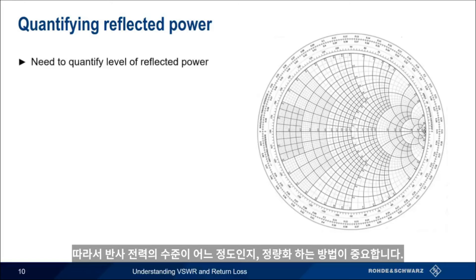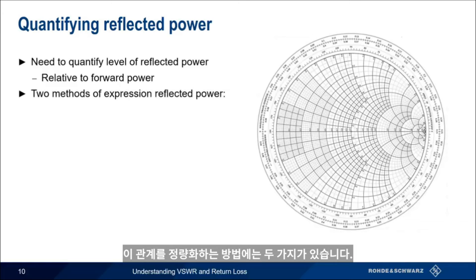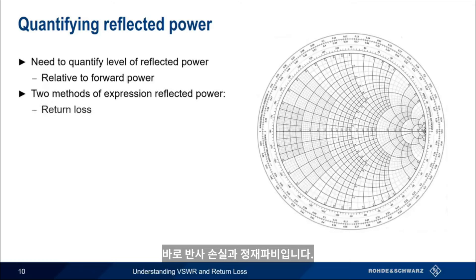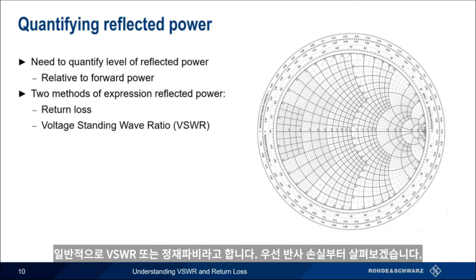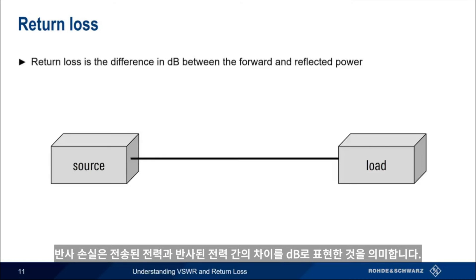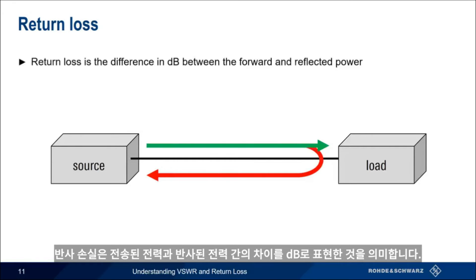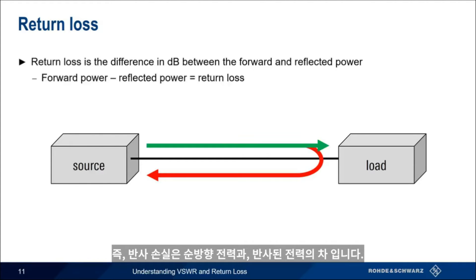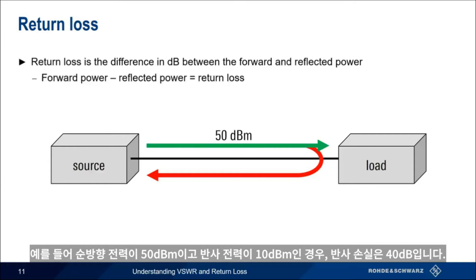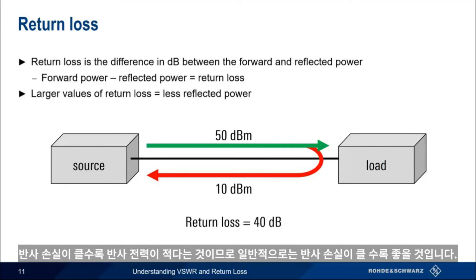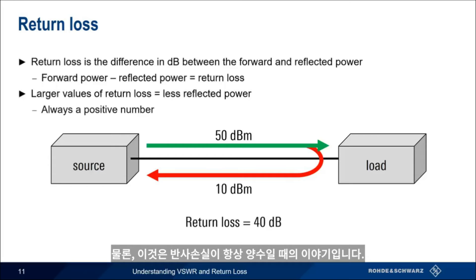Clearly it's important that we have some way of quantifying the level of reverse or reflected power, and in most cases we want to do this relative to the level of forward power. There are actually two different ways that this relationship is quantified: return loss and voltage standing wave ratio, commonly called either VSWR or VSWR. Return loss is nothing more than the difference in dB between the transmitted and reflected power — forward power minus reflected power equals return loss. For example, if our forward power is 50 dBm and our reflected power is 10 dBm, we have a return loss of 40 dB. Larger values for return loss mean that less power is reflected, so we usually want return loss to be as large as possible, and return loss must always be a positive number.